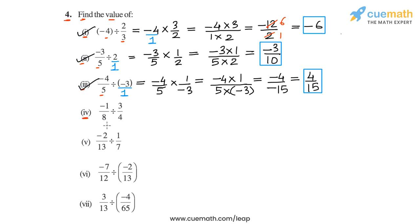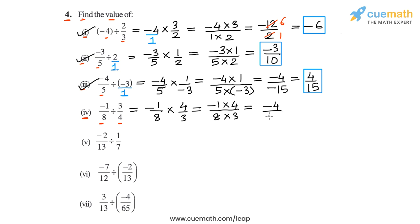In part 4, we have to calculate -1/8 divided by 3/4. We write this as -1/8 multiplied by the reciprocal of 3/4, which is 4/3. Multiplying gives -1 × 4 = -4 in the numerator and 8 × 3 = 24 in the denominator. The HCF of 4 and 24 is 4, so dividing above and below by 4 gives -1/6. So in part 4, the value is -1/6.